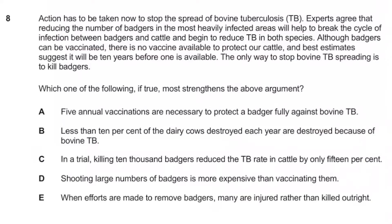Now we move on to IMAT 2018, Question 8. We're going to allow you to attempt it. Let's read it together: 'Action has to be taken now to stop the spread of bovine tuberculosis. Experts agree that reducing the number of badgers in the most heavily infected areas helps break the cycle of infection between badgers and cattle. Although badgers can be vaccinated, there is no vaccine available to protect cattle, and best estimates suggest it will be 10 years before one is available. The only way to stop bovine TB spreading is to kill badgers.' Which of the following most strengthens the above argument? Pause the video, give yourself just over a minute.